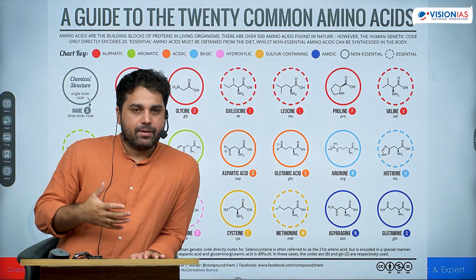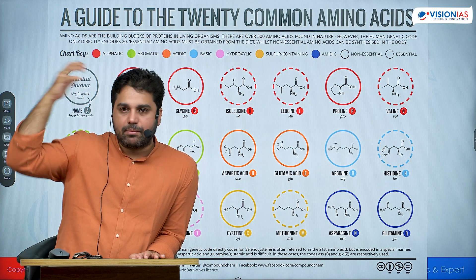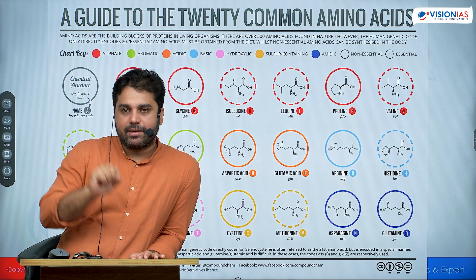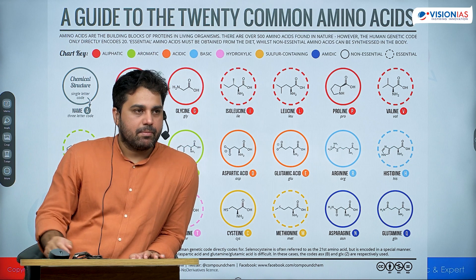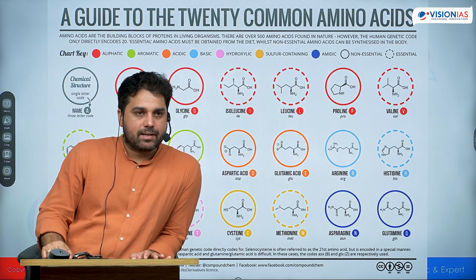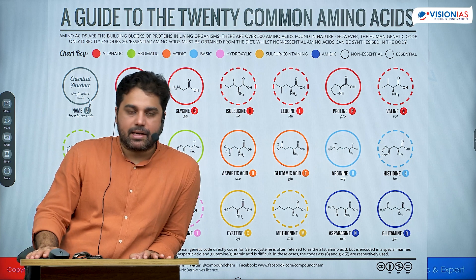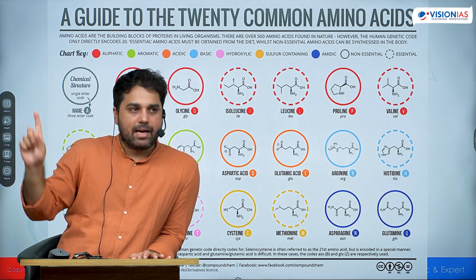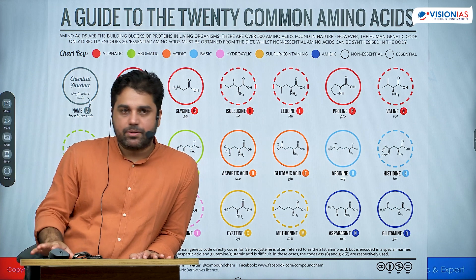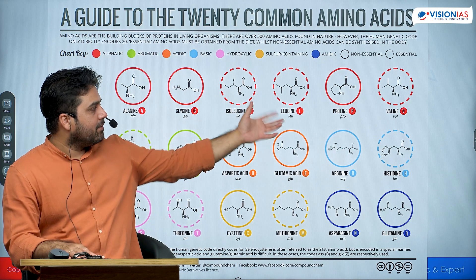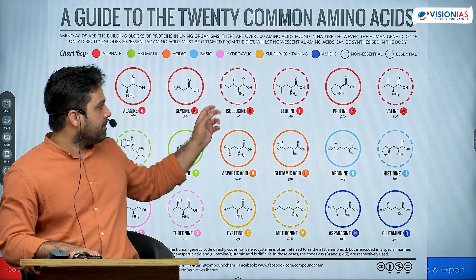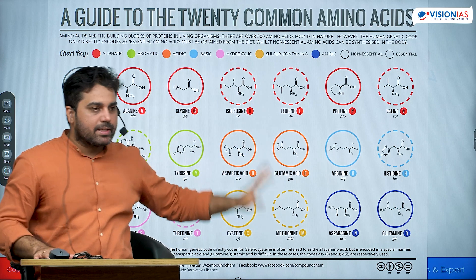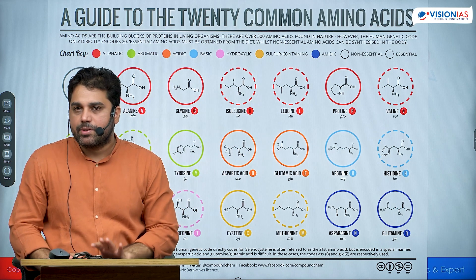When you eat protein-rich food — some chicken, paneer, or lentil — your body first takes out the amino acids and then, using those amino acids, can make many other types of protein. Those amino acids which you have to eat from outside are called essential amino acids for human beings. This also tells you that the word 'essential' can differ from species to species. When we use the term essential amino acids, we are inherently assuming we are talking about human beings.